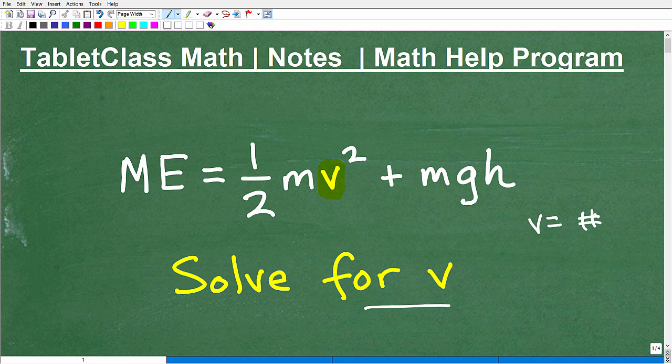We have a v squared, but I want you to solve for v. In other words, I want you to rearrange the variables in this equation such that we have v is equal to something. That's what we're going to be doing in this particular equation.